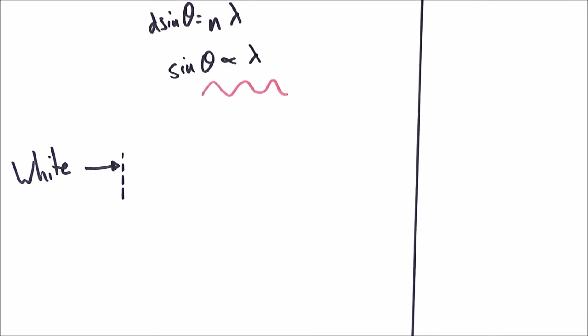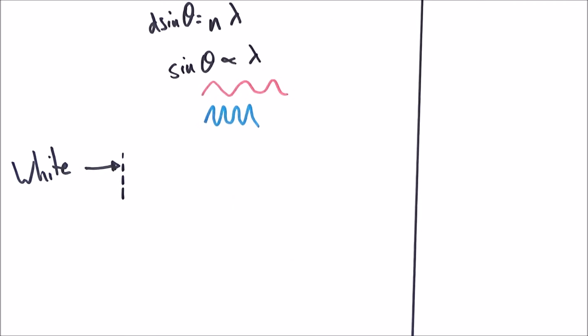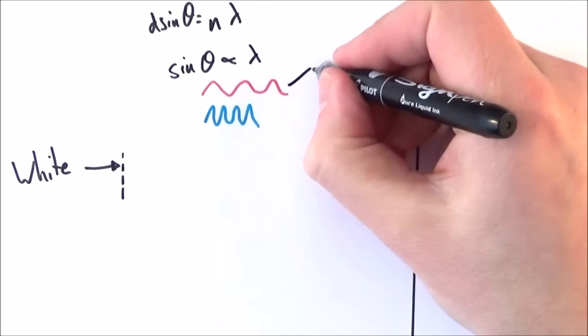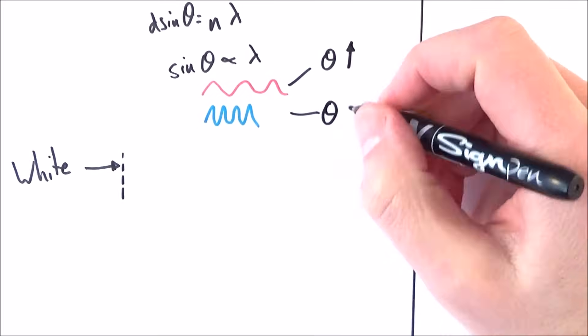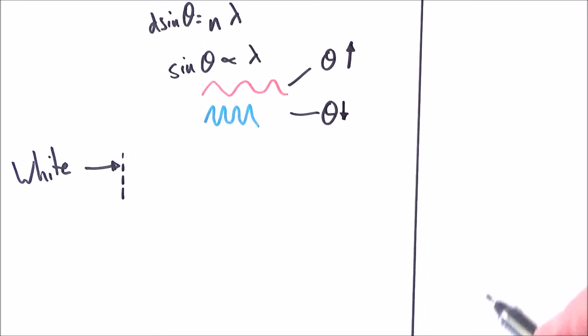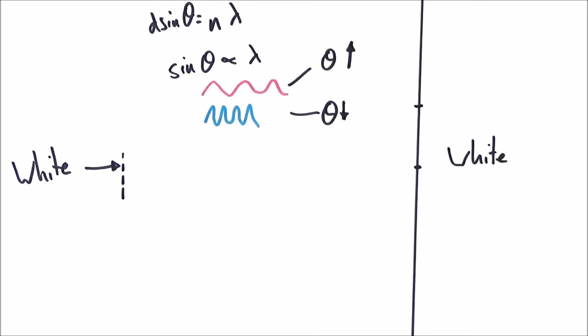For red light, theta is going to be bigger than for blue light. What that means is in the very center we have all the colors of light passing straight through and therefore we have a white spot in the middle. If we look at the first order maxima, what we find is that the blue light doesn't move a huge amount, but then the various colors of light spread out.